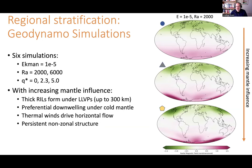What we did was put those heterogeneous heat flux conditions into our simulations. We have six different simulations — ones with homogeneous boundary conditions and ones with increasing amounts of mantle heterogeneity. As you increase that mantle influence, we start forming thick lenses of stably stratified fluid at the top of the core, up to a few hundred kilometers thick. You get preferential downwelling where cold slabs above the core-mantle boundary extract more heat, thermal winds drive persistent flows, and this gives non-zonal structure in both the flows and the magnetic fields.